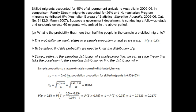To find this probability, we need to know the distribution of P. Since P refers to the sampling distribution of the sample proportion, we can use the theory that links the population to the sampling distribution. The sampling distribution of P will be approximately normal, with mean equal to the population proportion π, and standard deviation equal to the square root of π times (1 minus π) over n.